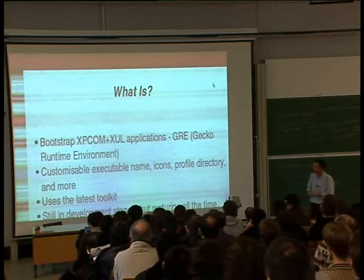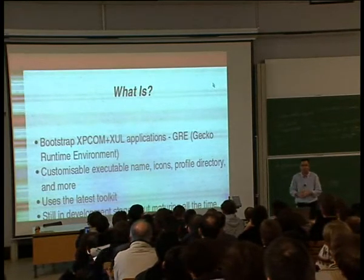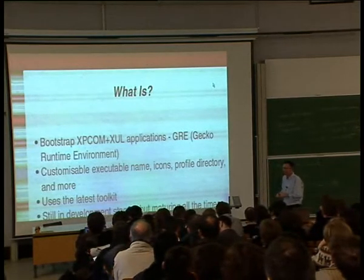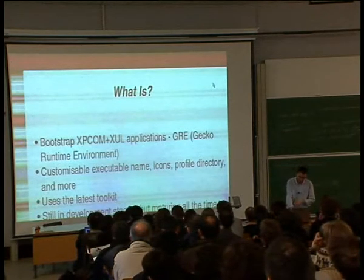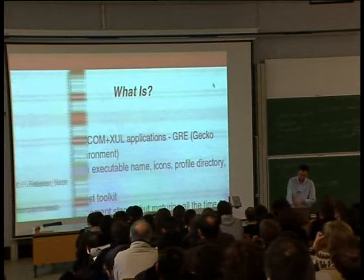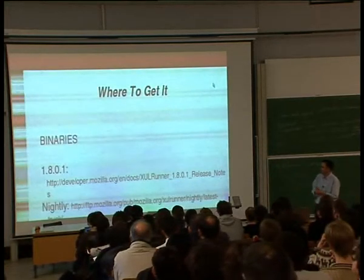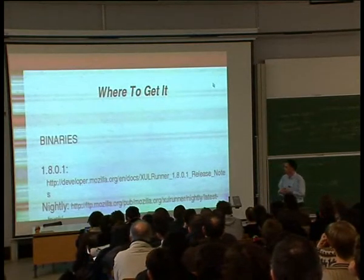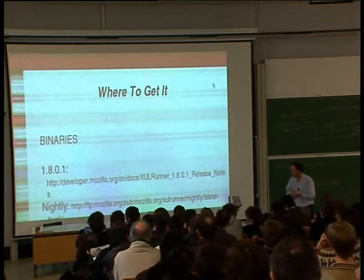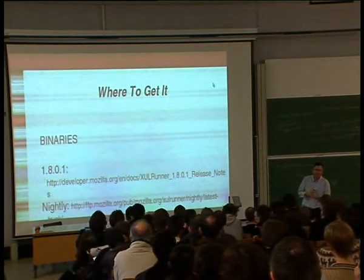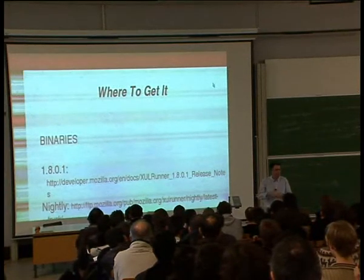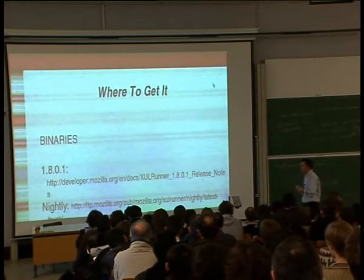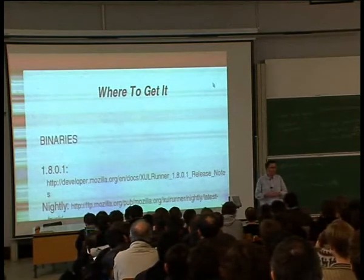XULRunner is still in development. The first developer release based on the 1.8 trunk of Mozilla has just been made — you can download it today. It's maturing all the time. You can get binaries in two types: the 1.8 build at the URL shown. If you don't feel like writing it down, my slides will be available later — you can email me or find it on my blog. If you want to live on the edge, nightly builds are also available.